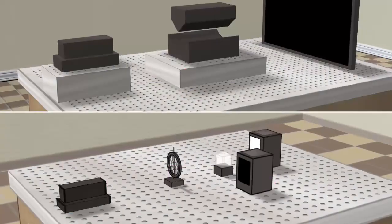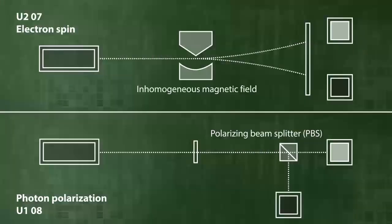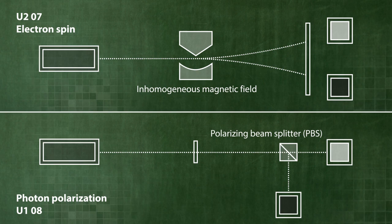Let us first compare the experiments. The Stern-Gerlach experiment measuring the spin of electrons, as shown in U27, and the experiment measuring the polarization of photons, as shown in U18.